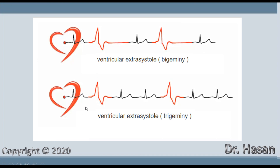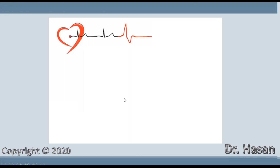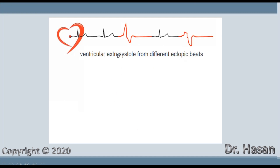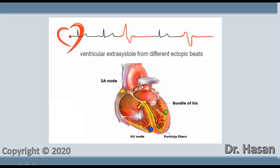When extrasystoles alternate with normal contractions in a ratio of one to two, this is called trigeminy. Finally, notice this case where two extrasystoles appear with different shapes — this means they are polymorphic. Polymorphic extrasystoles originate from various pathological ectopic foci in the heart, and different foci produce different shapes of extrasystoles on the ECG.